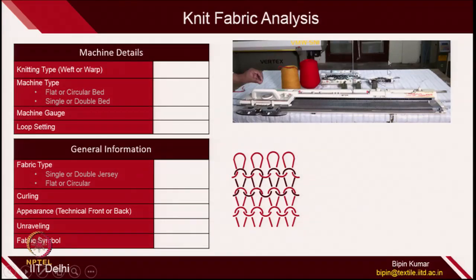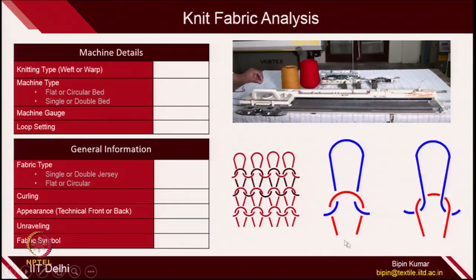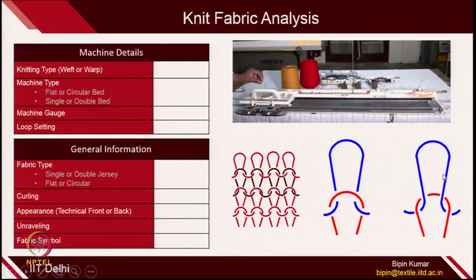Here you have a weft knit fabric. This is the common machine used for making weft knit fabrics. We have also introduced the technical back side — when the loop is formed on the back side, you can only see the head part and the sinker part. This is the technical front side of the loop — you can see the loop is formed on the front side of the back old loop, and the legs are visible. So this is the technical back loop and this is the technical front loop.